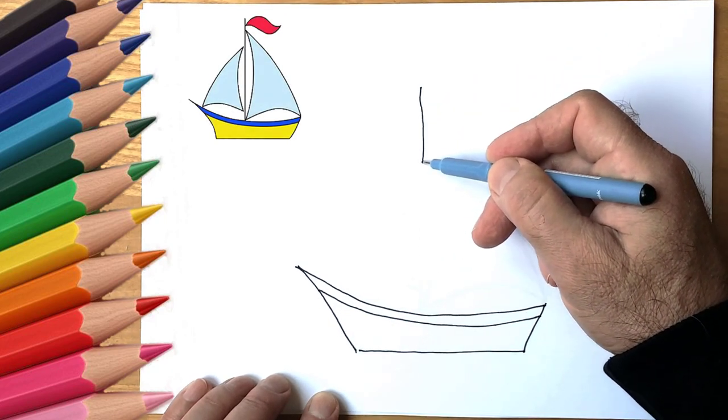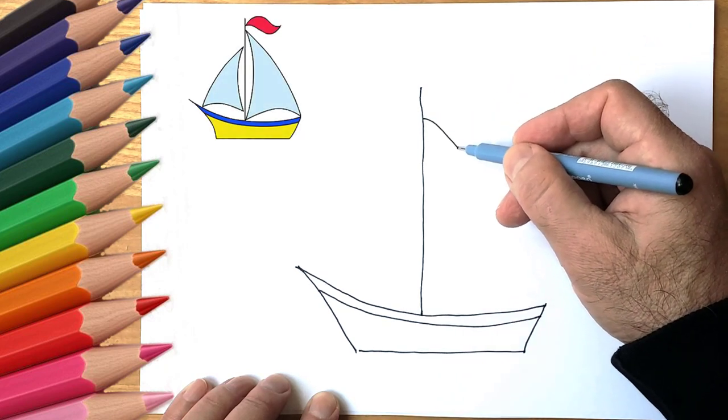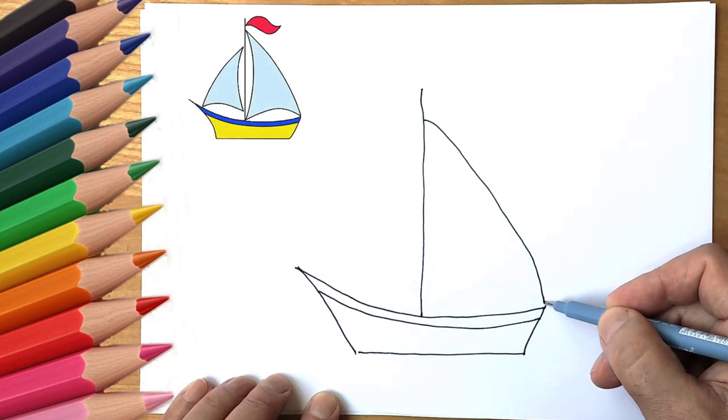It will be a sailing ship. First, draw a line. Then draw a rectangle. This will be the basis of the ship.